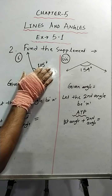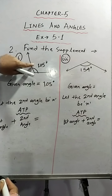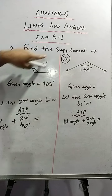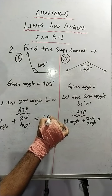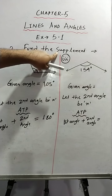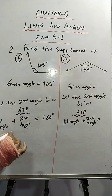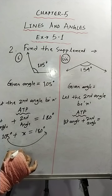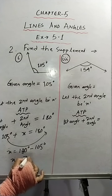The given angle is 105 degrees, which we consider as the first angle. We have to find the supplement of 105 degrees, meaning we need to find the second angle. Let the second angle be x. According to the problem: first angle plus second angle equals 180 degrees — not 90 degrees, because we are finding the supplement. So 105 plus x equals 180. Transposing, x equals 180 minus 105, which is 75 degrees. So the supplement of 105 degrees is 75 degrees.